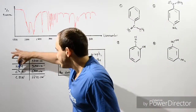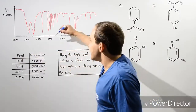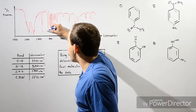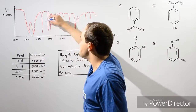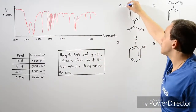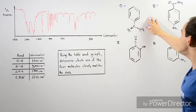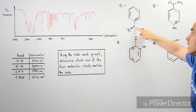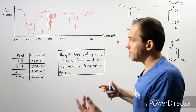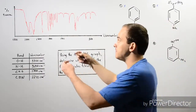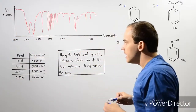The C=O double bond has a peak at wave number 1700. Looking at the graph around 1700, we see there is no peak or dip there. Because there is no peak at 1700, it cannot be molecule 1 or molecule 2, since both of those molecules contain the C=O bond. When I say peak, I really mean dip because the transmittance goes downward.